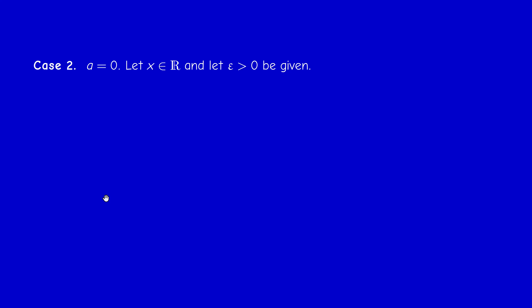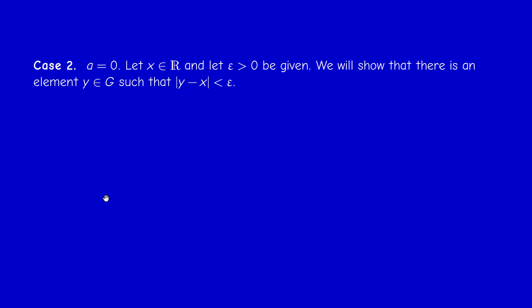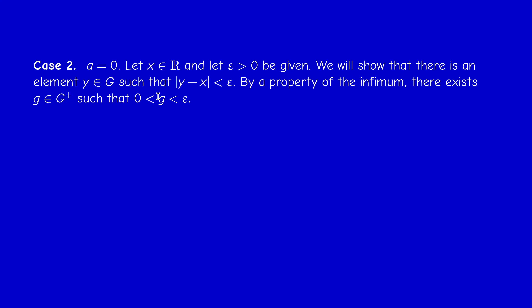We follow the familiar procedure from Proposition 1.6. Take an element x in R and a positive number ε. I will prove that the interval (x - ε, x + ε) meets the group G — equivalently, there is an element y in G whose distance to x is less than ε. Since the infimum is 0 and ε > 0, ε is not a lower bound of G+. So we can find an element g in G+ less than ε.